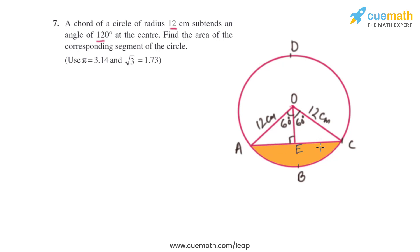In triangle AOE, we know that cos 60 degrees equals OE upon OA. The value of cos 60 is 1 by 2, and that equals OE divided by 12. From here we get the value of OE as 6 centimeters.